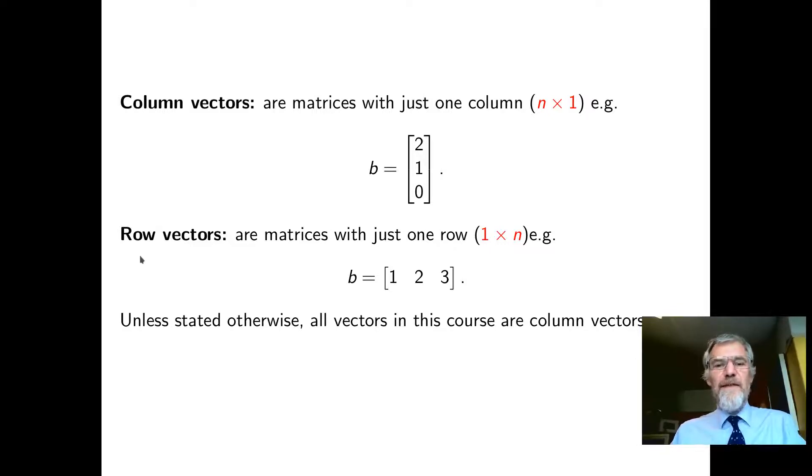For example, this vector 2, 1, 0. We can also have row vectors. They're matrices that are one row by n columns. Here's a vector with three entries, so it has one row and three columns. Generally, when we say vector, we mean column vector, and we'll see why that's convenient later.